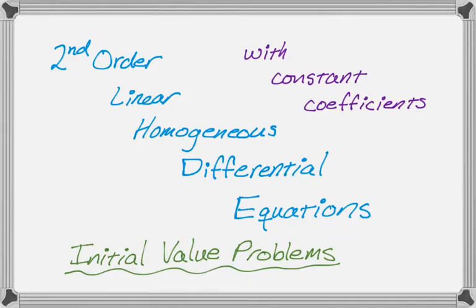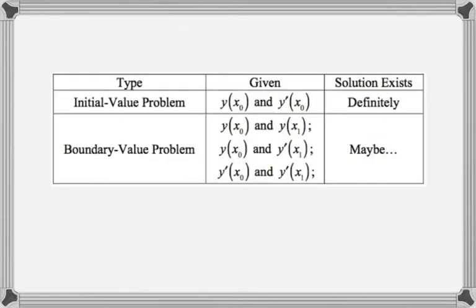In this video we're going to talk about second order linear homogeneous differential equations with constant coefficients, and specifically solving initial value problems that involve those. So let's see what we mean by initial value problems. There are two types of things you'll tend to deal with: initial value problems and boundary value problems. An initial value problem — you can tell it's an initial value problem because you're told multiple things at the same input value, so the same x value.